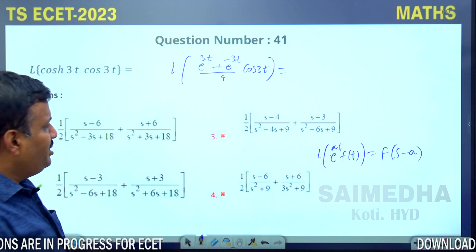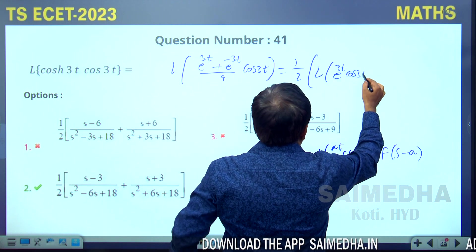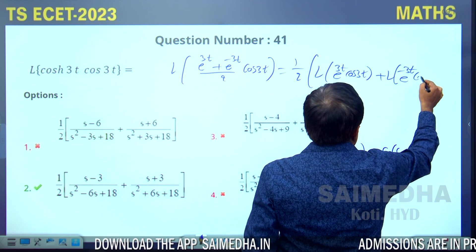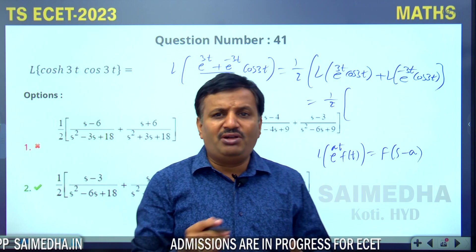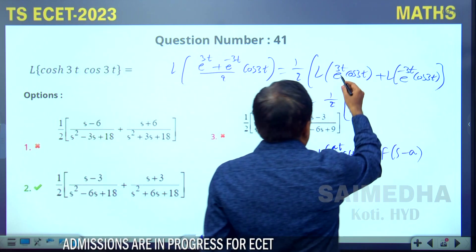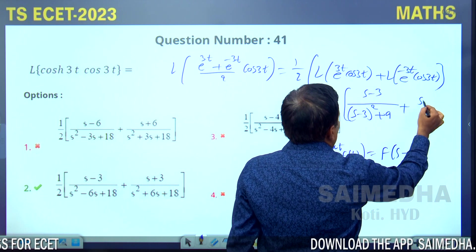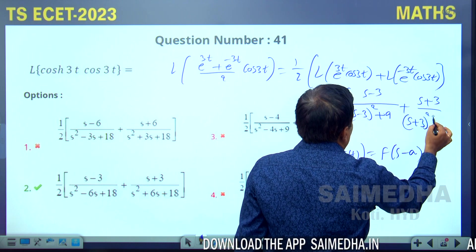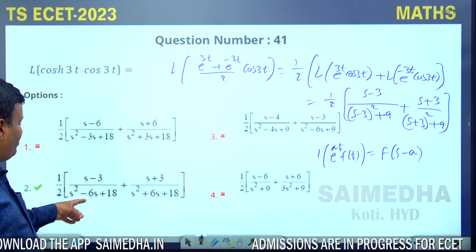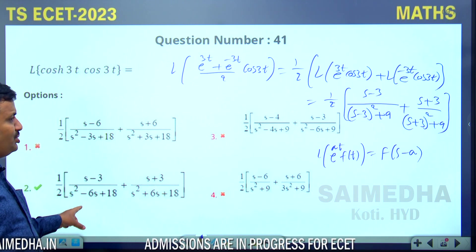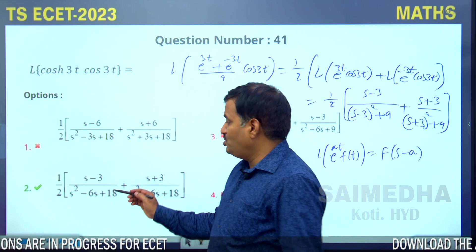Bringing the half outside: Laplace of e^{3t}·cos3t + Laplace of e^{-3t}·cos3t. Laplace of cos3t is s/(s²+9). By the shifting theorem, we get (s-3)/((s-3)²+9) plus (s+3)/((s+3)²+9), all multiplied by 1/2.